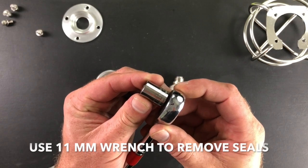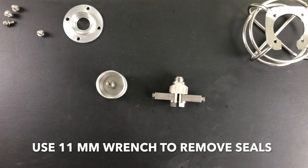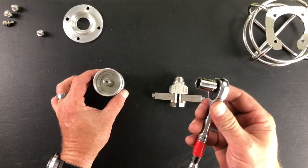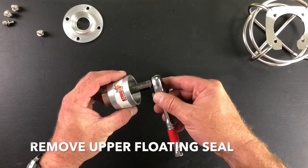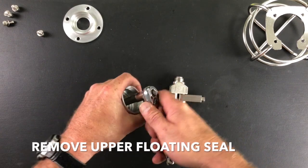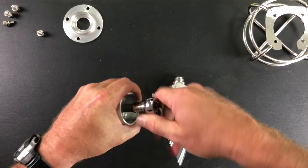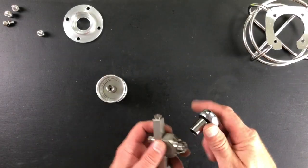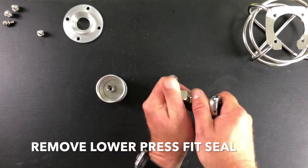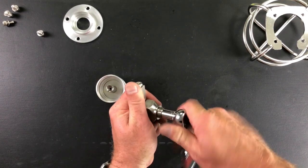Step five, removing upper and lower seals. Use an 11 millimeter wrench to remove both the upper and lower seal. Note the upper floating seal is always located in the cap on top of the stem. Note the press fit lower seal is always located in the spray head.